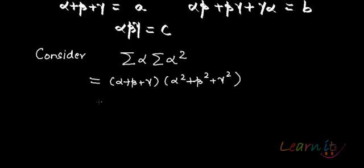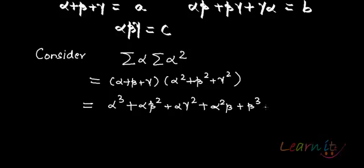Okay, so if you open it up, what will you get? You will get the values like α³. Alpha gets multiplied with each and every element out here. So, αβ² + αγ² plus, now beta gets multiplied. So, α²β + β³ + βγ², then gamma gets multiplied, then you get γα² + γβ² + γ³.